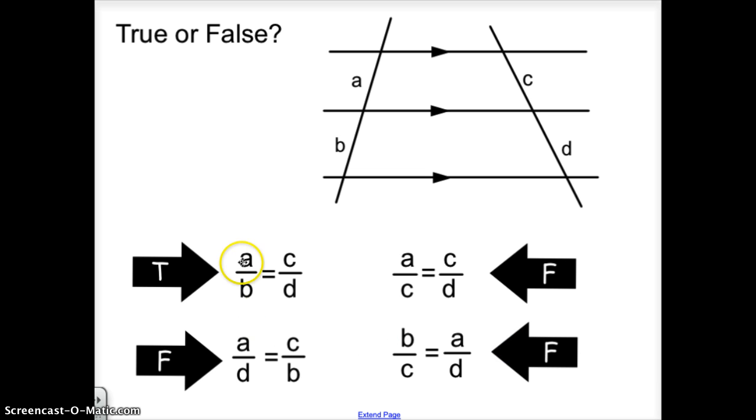So the only one that we would get would be AD and CB, and if you look at the diagram, you can also see that the proportion is basically set up in the location for you. A over B, C over D, which means the cross product has to be AD and BC. The only one that has that cross product is AB over CD.